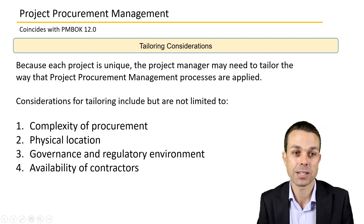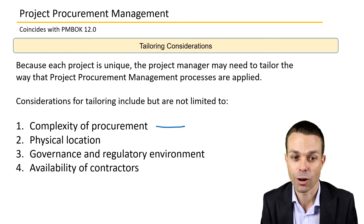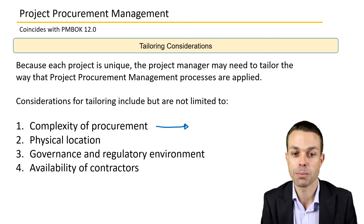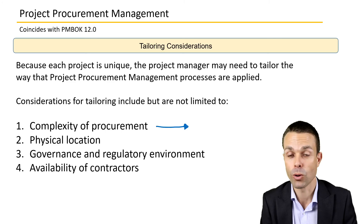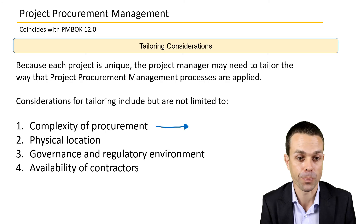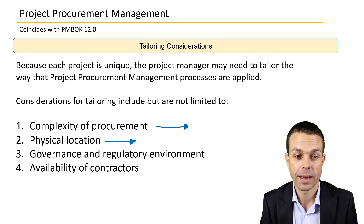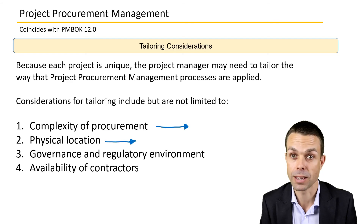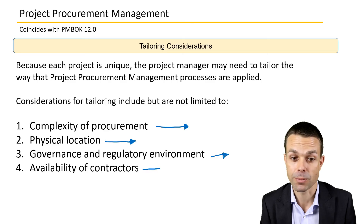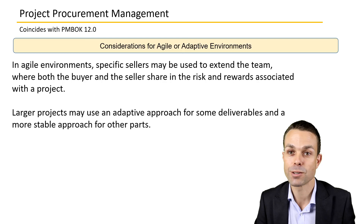Tailoring considerations for project procurement management include the complexity of procurement, which may impact the type of contract used. The physical location might also impact things, as might regulations or governance around procurement within an organization, and the availability of sellers to actually do the work.